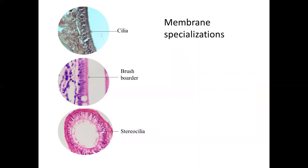Moving on to membrane specializations: there are structures visible in light microscopy and structures requiring electron microscopy. Cell junctions are seen in electron microscopy, but cilia, the brush border, and stereocilia can be seen in light microscopy. This is a slide of the inner nasal wall showing pseudostratified columnar ciliated epithelia with cilia visible. Here you see intestinal simple columnar epithelium with microvilli — that hazy appearance is the brush border. Here you see stereocilia in the lumen, and this is pseudostratified columnar epithelium with stereocilia.